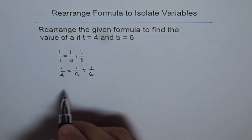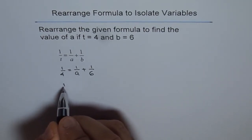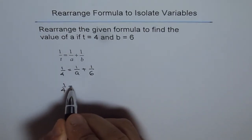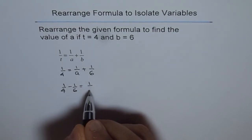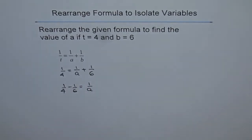Now I need to isolate A. So I can write 1 over 4 minus 1 over 6 equals 1 over A. That is how we can do it.